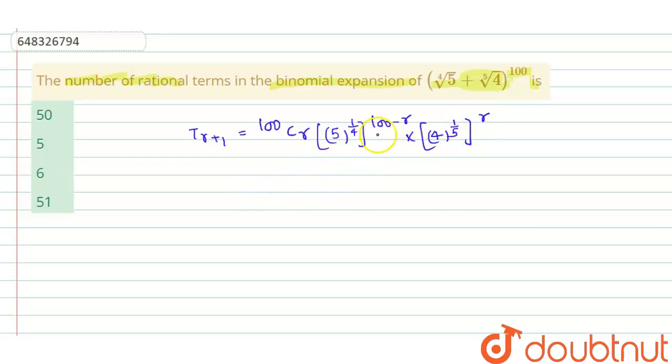So in this case, (100 minus r) by 4 will be the exponent for 5, so (100 minus r) by 4 must belong to integers, and r by 5 must belong to integers.